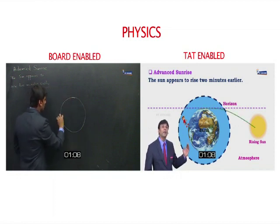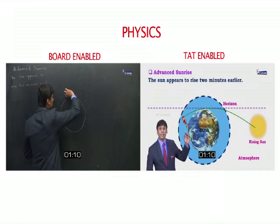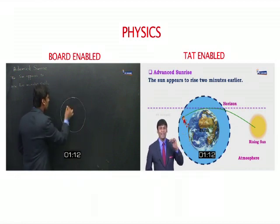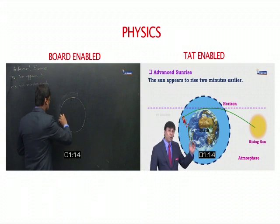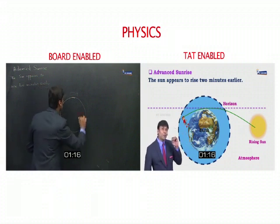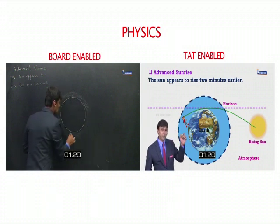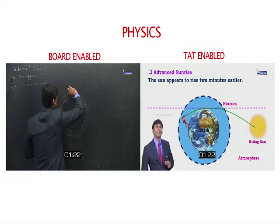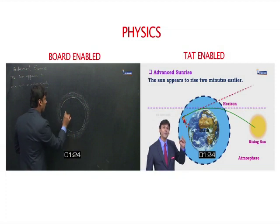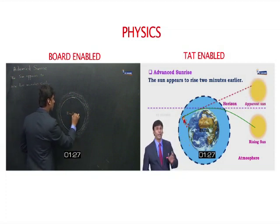The light coming from the sun bends and after bending goes into the observer's eyes. But when it goes into the observer's eye, the observer can't see a curved path. He sees a straight path. So the observer feels the light is actually coming from this point, that is, a point above the horizon.